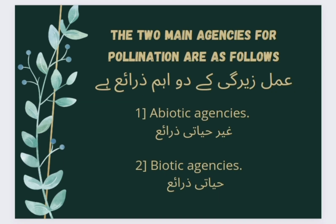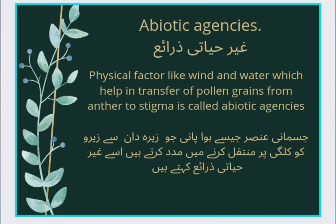The two main agencies for pollination are: First, Abiotic Agencies (Gair Hayati Zerai), and Second, Biotic Agencies (Hayati Zerai). Physical factors like wind and water which help in transfer of pollen grains from anther to stigma are called Abiotic Agencies.